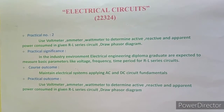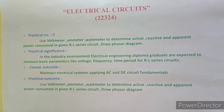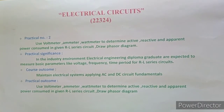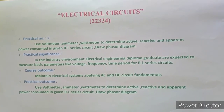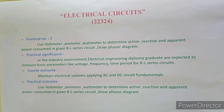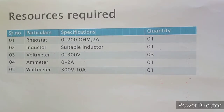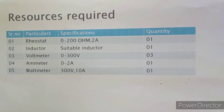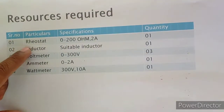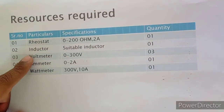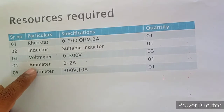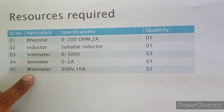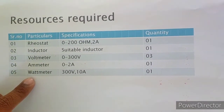Practical outcome: use voltmeter, ammeter, and wattmeter to determine active, reactive, and apparent power consumed in an RL series circuit. Resources required for this practical: rheostat, inductor, voltmeter, ammeter, and wattmeter — with their specifications and quantities.